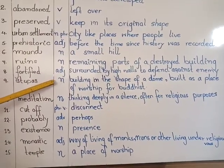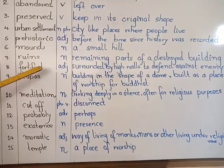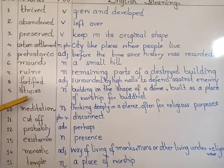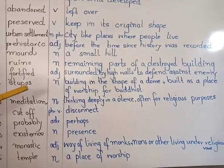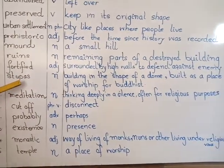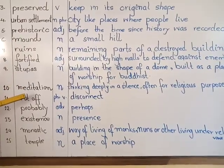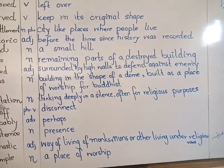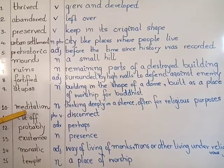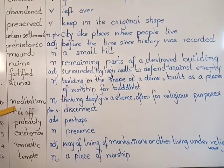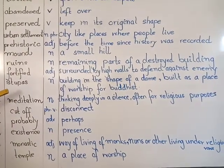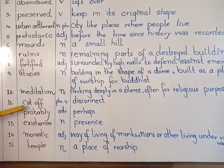The seventh word is 'fortified', an adjective meaning surrounded by high walls to defend against the enemy — taakwat dena, secure karna. The eighth word is 'stupas': a building in the shape of a dome, built as a place of worship for Buddhists. The ninth word is 'meditation', meaning thinking deeply in silence, often for religious purposes — muraaqaba, to gain nearness to God.